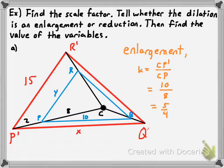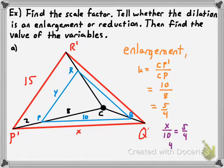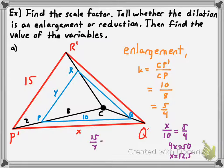To find the values of the variables, use the scale factor. For X: the ratio of image to pre-image is 5 to 4, so X/10 = 5/4. Cross-multiplying gives 4X = 50, so X = 12.5. For Y: comparing corresponding sides, 15/Y = 5/4. So 5Y = 60, meaning Y = 12. That's how you find the scale factor and use it to find missing dimensions in a dilation.